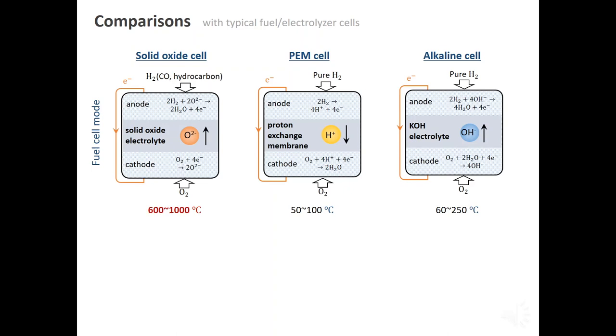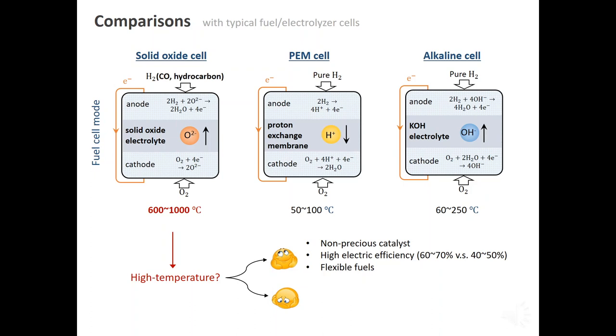Solid oxide fuel cell features high operating temperature. This brings both benefits and challenges. High temperature accelerates reactions, so solid oxide fuel cell does not need very precious catalyst. High temperature also improves the efficiency significantly and allows for flexible fuels, which means that not only hydrogen, but also carbon monoxide and hydrocarbon can be used by solid oxide fuel cell. Moreover, solid oxide fuel cell generates high quality heat, which can be used for combined heat and power applications.